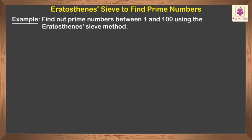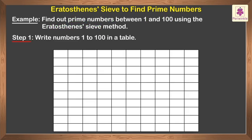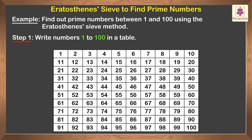Let us look at how to find out prime numbers between 1 and 100 using the Eratosthenes' Sieve method. Step 1: Write numbers 1 to 100 in a table as shown. Step 2: Cross out 1. It is not prime.